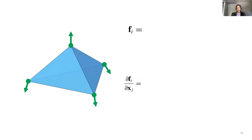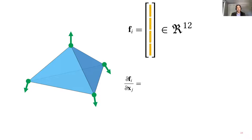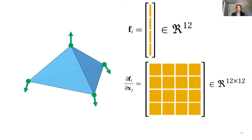Let's go over what we need in more detail. We need the forces — a 12-vector, since we have four nodes on our tetrahedron each with three degrees of freedom. We also need the Jacobian of those forces — a 12 by 12 matrix, which is the derivative of a vector with respect to a vector.